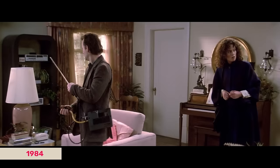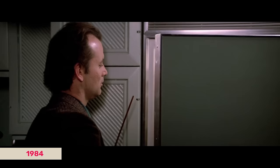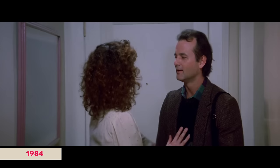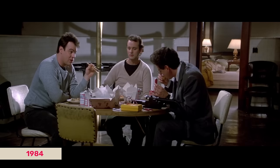While Ray and Egon begin to research who Zuul is, Peter — ever the romantic opportunist — heads to Dana's apartment to investigate. Making unwanted advances while using the ghost sniffer, Dr. Venkman finds no traces of anything paranormal there. Dana has to force him out of the apartment. Seriously, Peter — no means no.